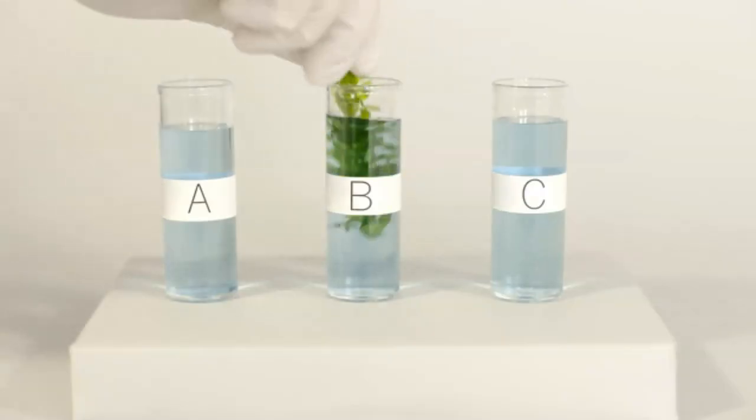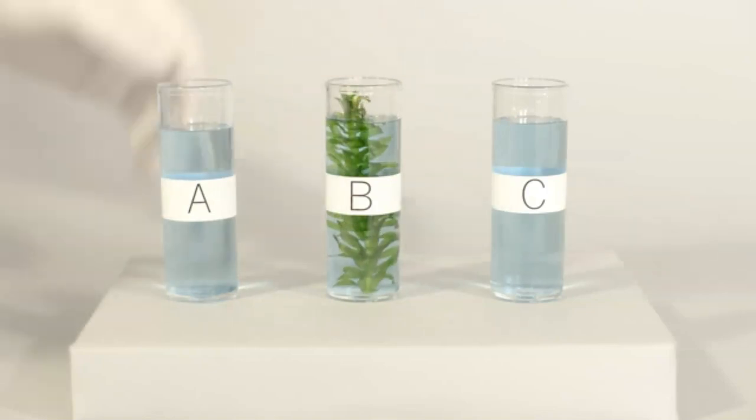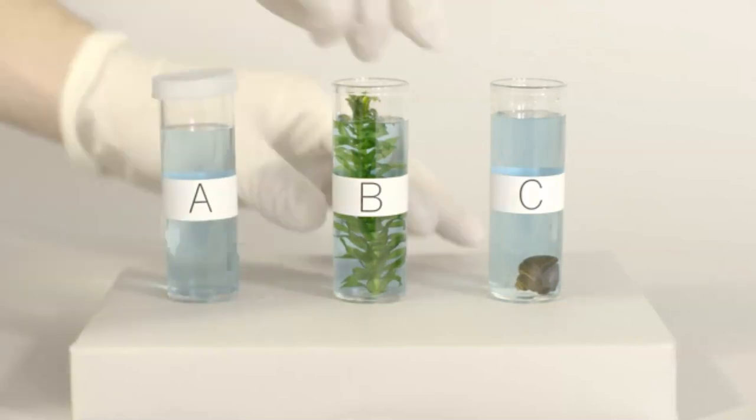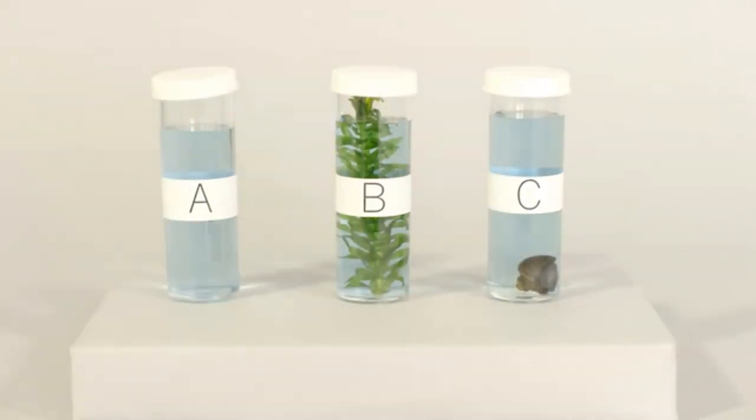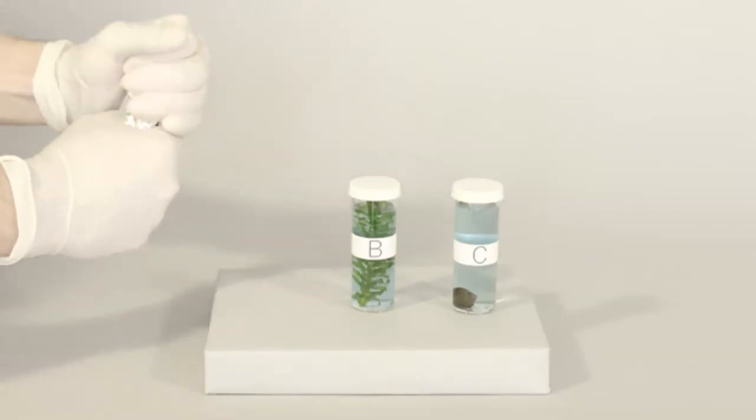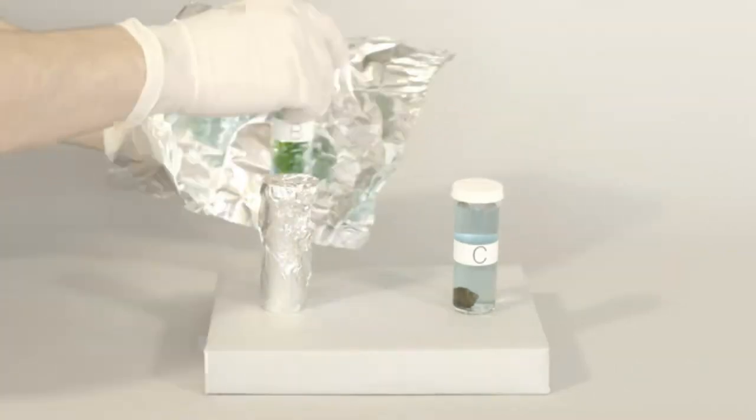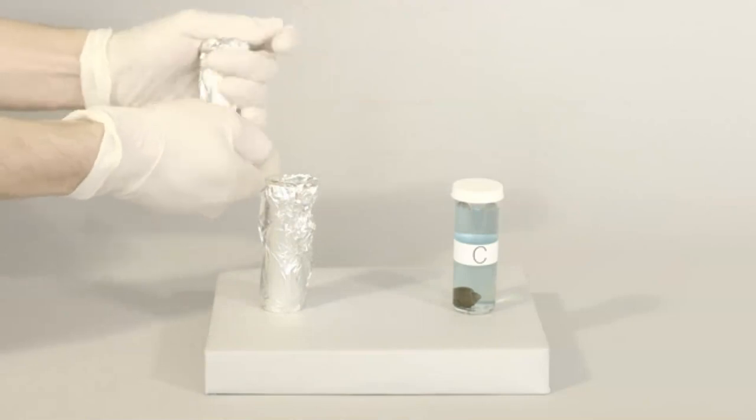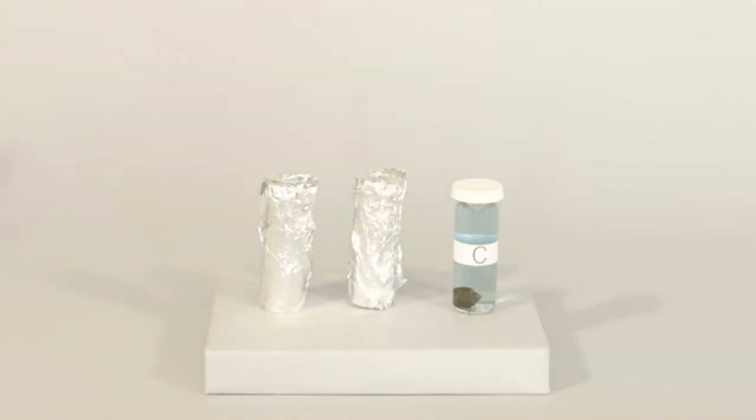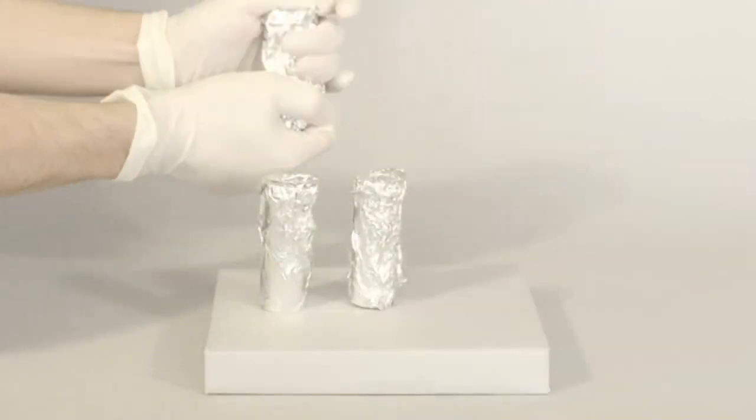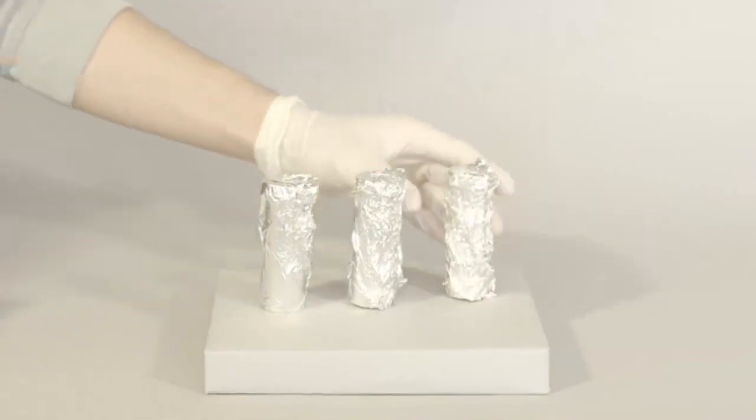Next, we'll add an elodia plant to vial B and a freshwater snail to vial C. Vial A, with no organism, will be the control group. Finally, we wrap all three vials in foil. We don't want light to interfere with our results since we know that plants perform photosynthesis and take in carbon dioxide from the environment in the light. We're going to check back with the vials after 12 hours. What do you think will happen to the carbon dioxide levels?